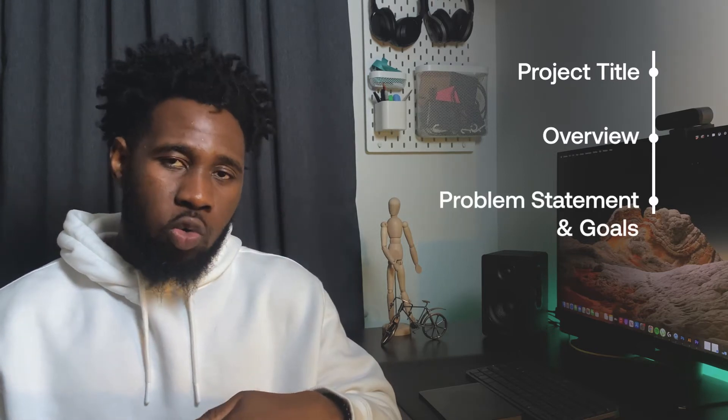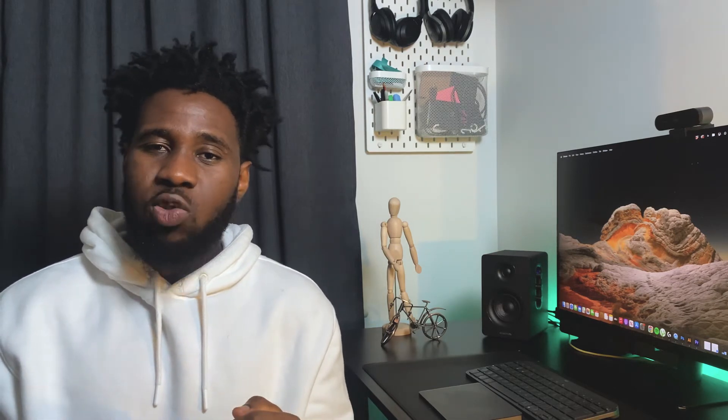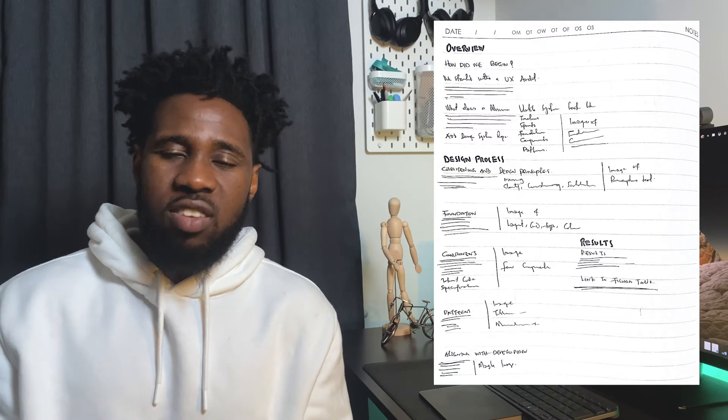Whenever I'm writing a case study, I typically follow a structure by telling a story from the project title to the outcomes and results. My case study follows this structure: it goes from the project title, to the overview, to the problem statement and goals, to the design process, and then the outcome, results or learnings. Your own structure can be different, but make sure you're telling a story from the beginning to the end of the case study and finish with results, outcomes or learnings depending on the type of project you're working on.